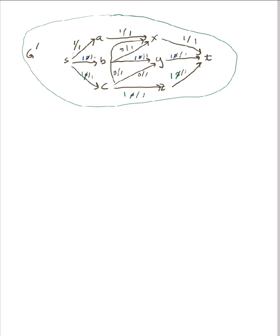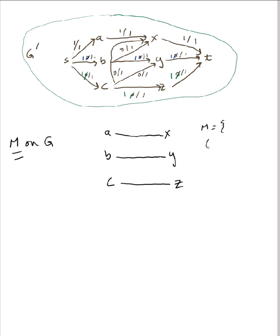Here was the result of doing Ford-Fulkerson on my G prime. Let's go back to my original G and see what we have. My original G has A, B, C, X, Y, Z. Wherever you see something that has a flow of 1, you draw that edge back in. B has no edge going to X (flow is 0), but it has an edge going to Y. C has no edge going to X or Y (flow is 0), but an edge going to Z. So there is my matching: M equals the set {AX, BY, CZ}, and the cardinality of M equals 3.